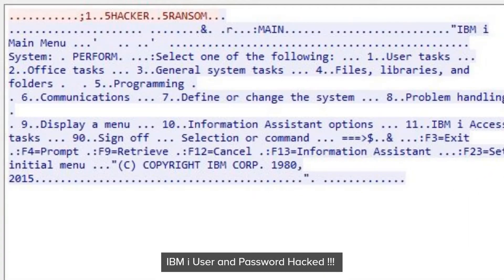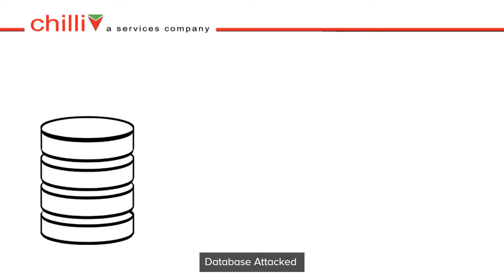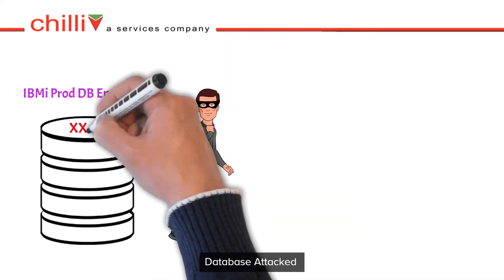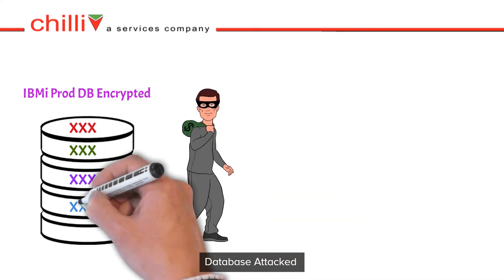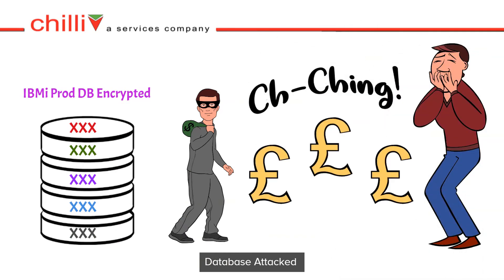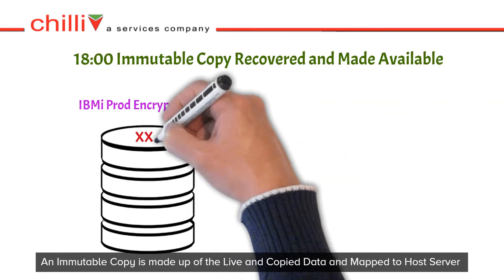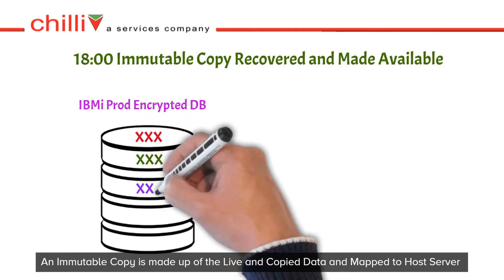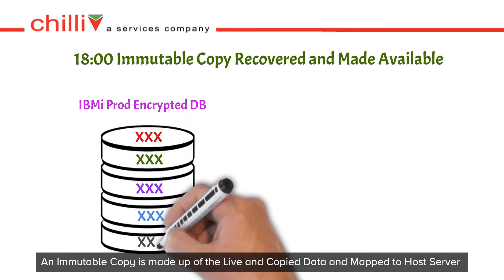They could then quietly go about either stealing or encrypting less frequently used data — for example, encrypting backups written to disk which, once written, are rarely checked to ensure they can be reused in the event of an unplanned system outage, or worse still, a ransomware demand.